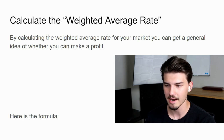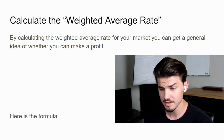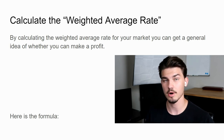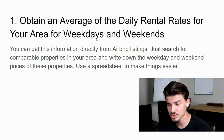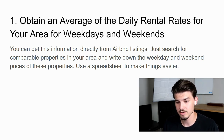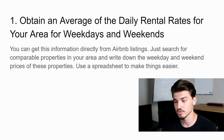The first thing you have to do is calculate the average weighted rate. By calculating this average weighted rate for your market, you can get a general idea of how and where you can make a profit. To obtain this, you have to find the average daily rental rates for every single listing in your market on weekdays and weekends. You can get this information directly from Airbnb's listings. Just search comparable properties — if you have a two-bedroom one-bath, find similar listings in your market and use that as a model. Keep a spreadsheet to stay organized.